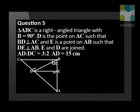Triangle ABC is a right angled triangle with angle B equal to 90 degrees. D is the point on AC such that BD is perpendicular to AC and E is a point on AB such that DE is perpendicular to AB. E and D are joined. AD to DC is equal to 3 is to 2. AD is equal to 15 cm.